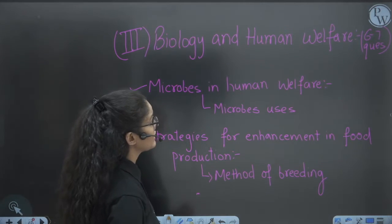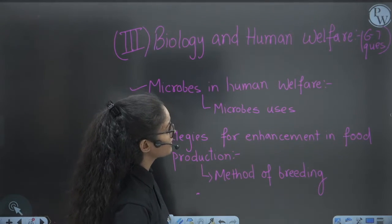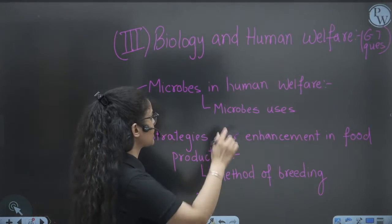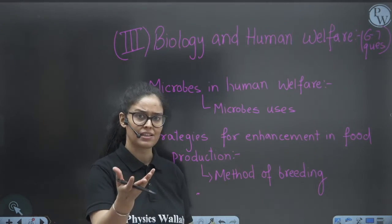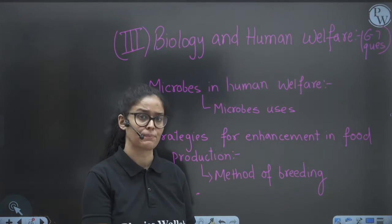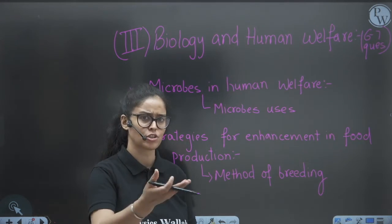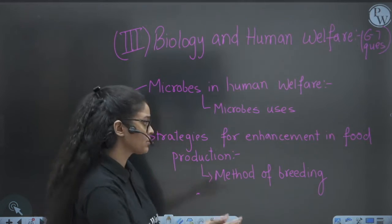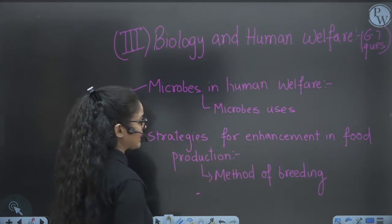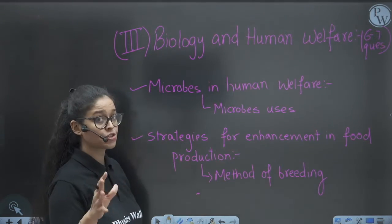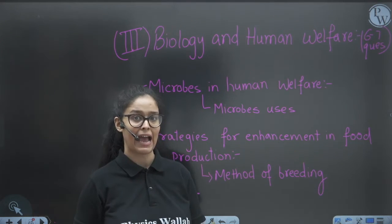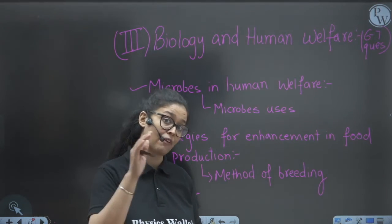Biology in Human Welfare: six to seven questions. In Microbes, they ask about the uses and examples of various microbes. Strategies for Enhancement in Food Production focus on methods of breeding in plants and animals — you have to cover those topics thoroughly.